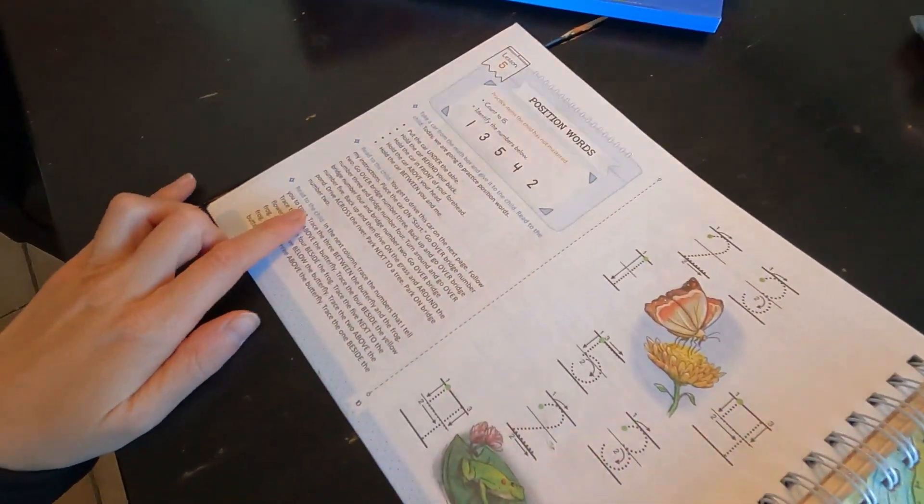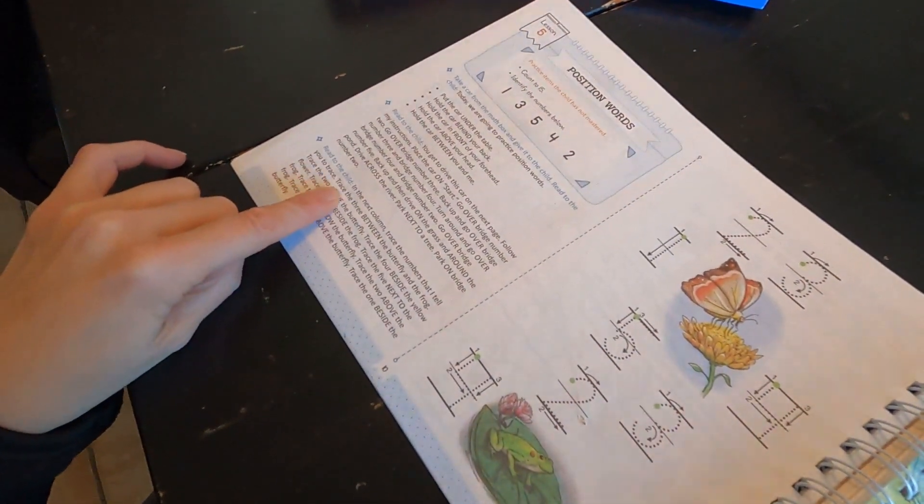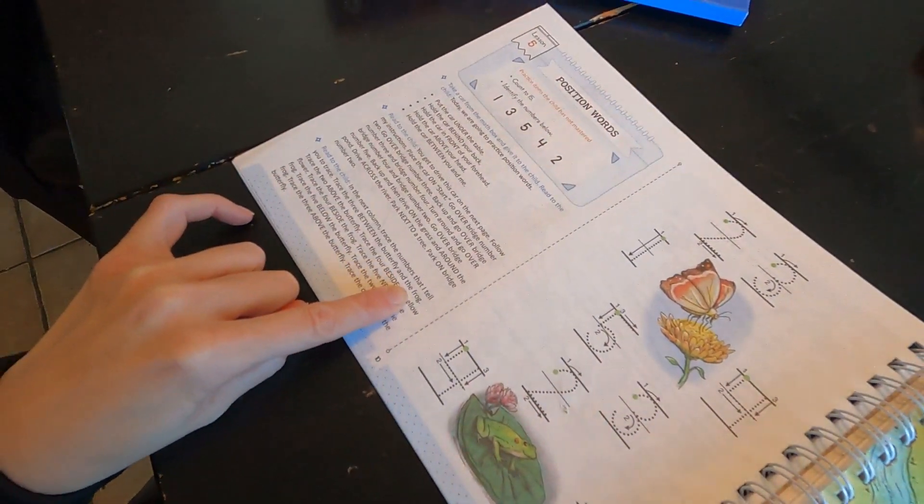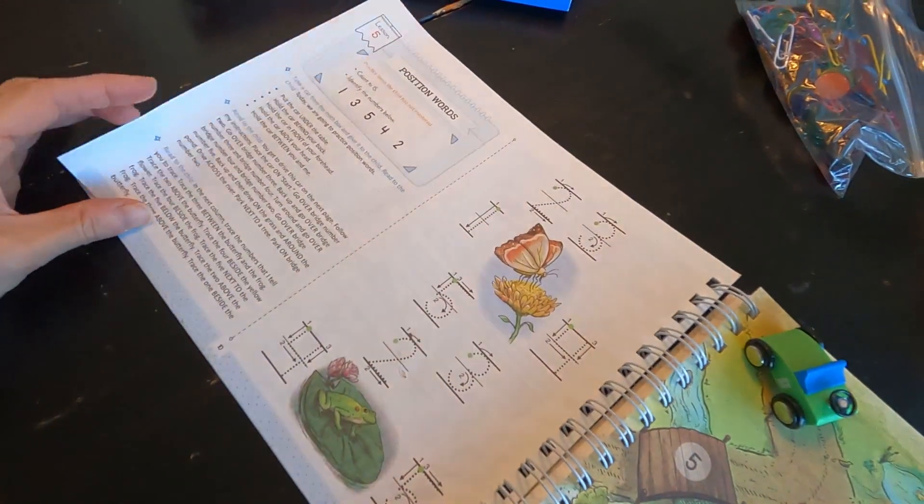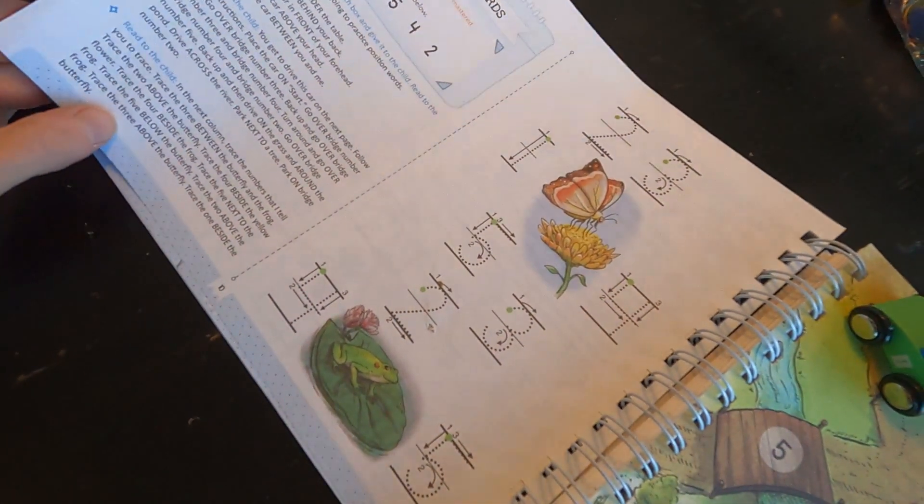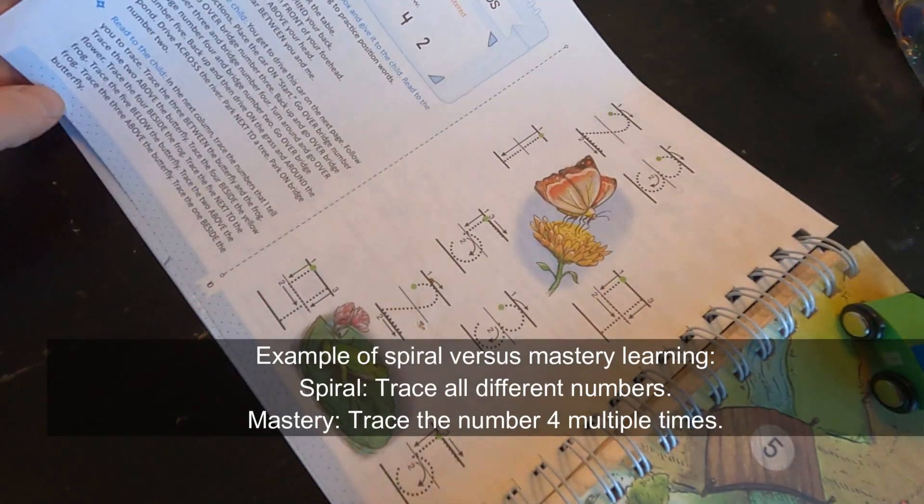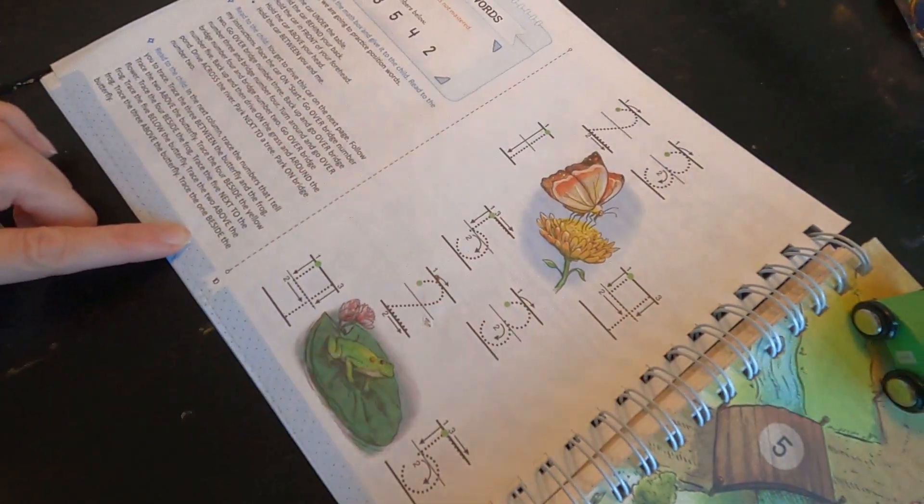Now it doesn't explain to me why we're doing this, but that's fine. Read to the child in the next column: trace the numbers that I tell you to trace. Trace the three between the butterfly and the frog. Trace the four beside the yellow flower, trace the four beside the frog, trace the five next to the frog, trace the five below the butterfly, trace the two above the frog, and trace the three above the butterfly, trace the one beside the butterfly.